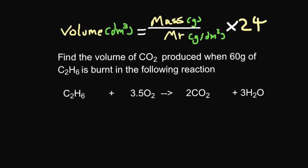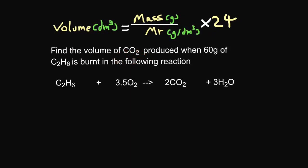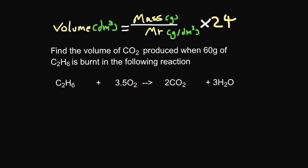So this question is pretty much as hard as it gets in GCSE. Find the volume of CO2 produced in the following reaction. So you've got C2H6 plus oxygen, making CO2 and H2O. This question is hard because it involves molar ratios. We've got one mole of ethane, C2H6, reacting with 3.5 moles of oxygen.